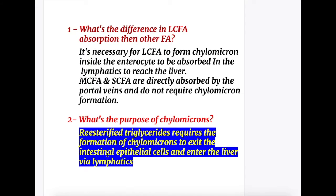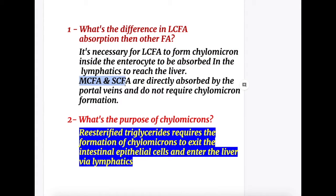Answer to question one: the difference in long chain fatty acid absorption compared to other fatty acids is that long chain fatty acids must form chylomicrons inside the enterocyte to be absorbed via the lymphatics to reach the liver. Medium and short chain fatty acids are directly absorbed by the portal veins and do not require chylomicron formation.